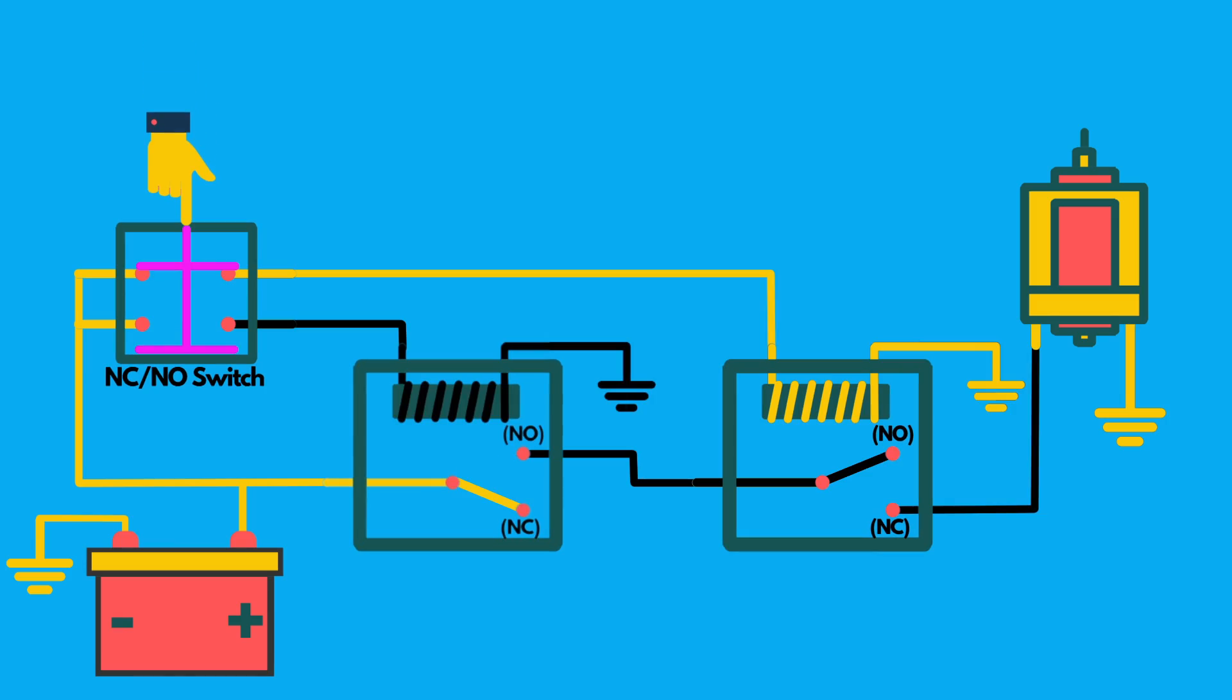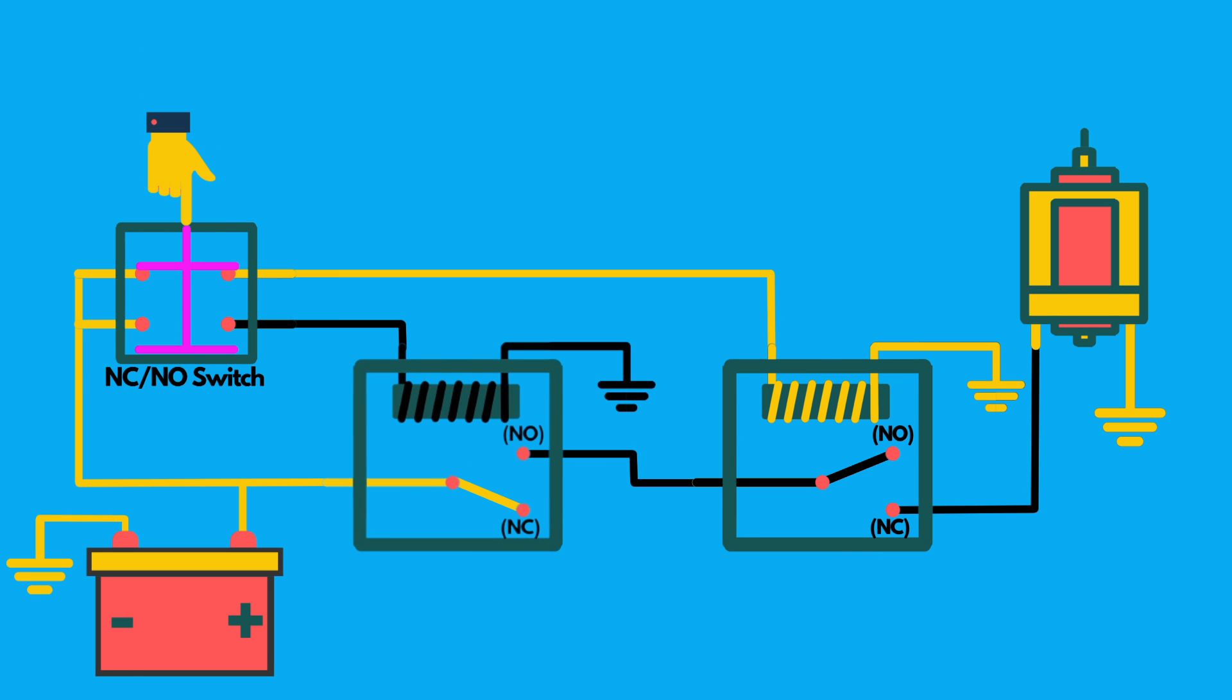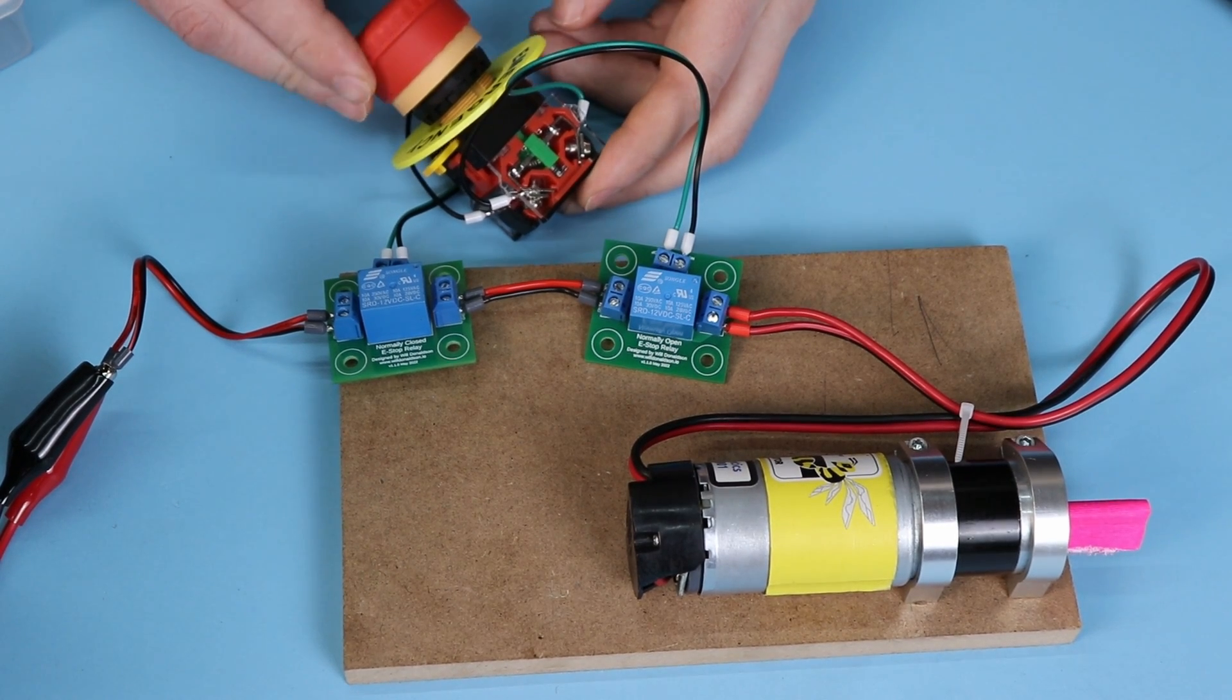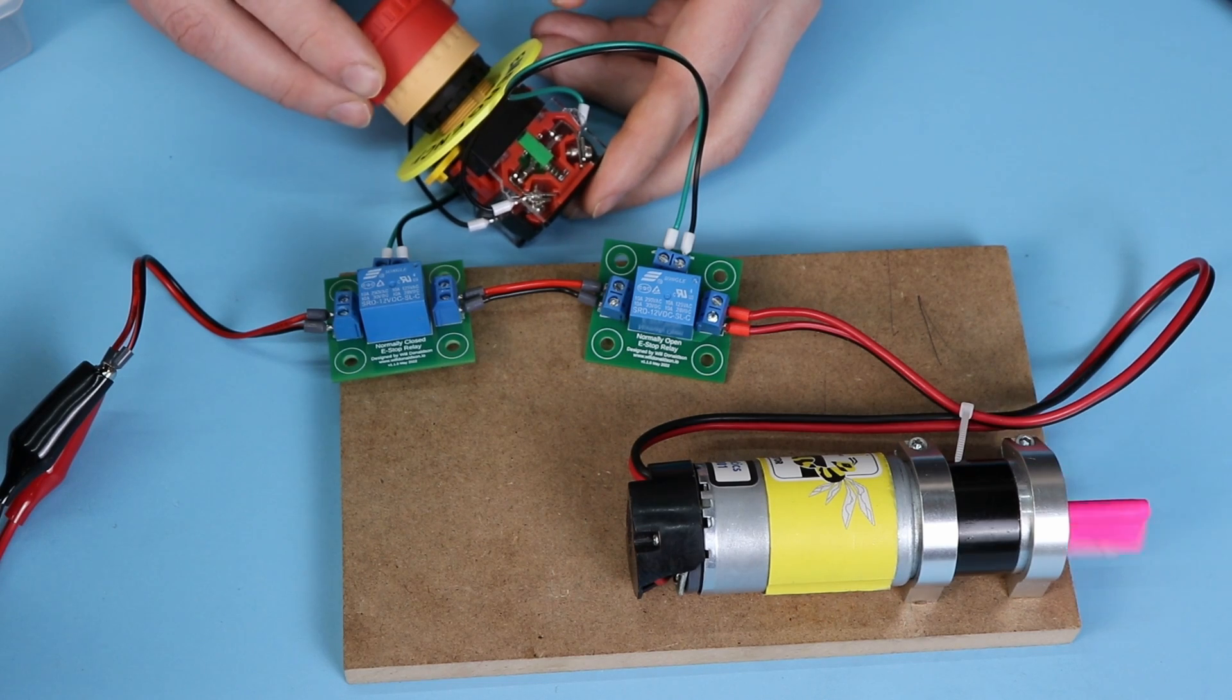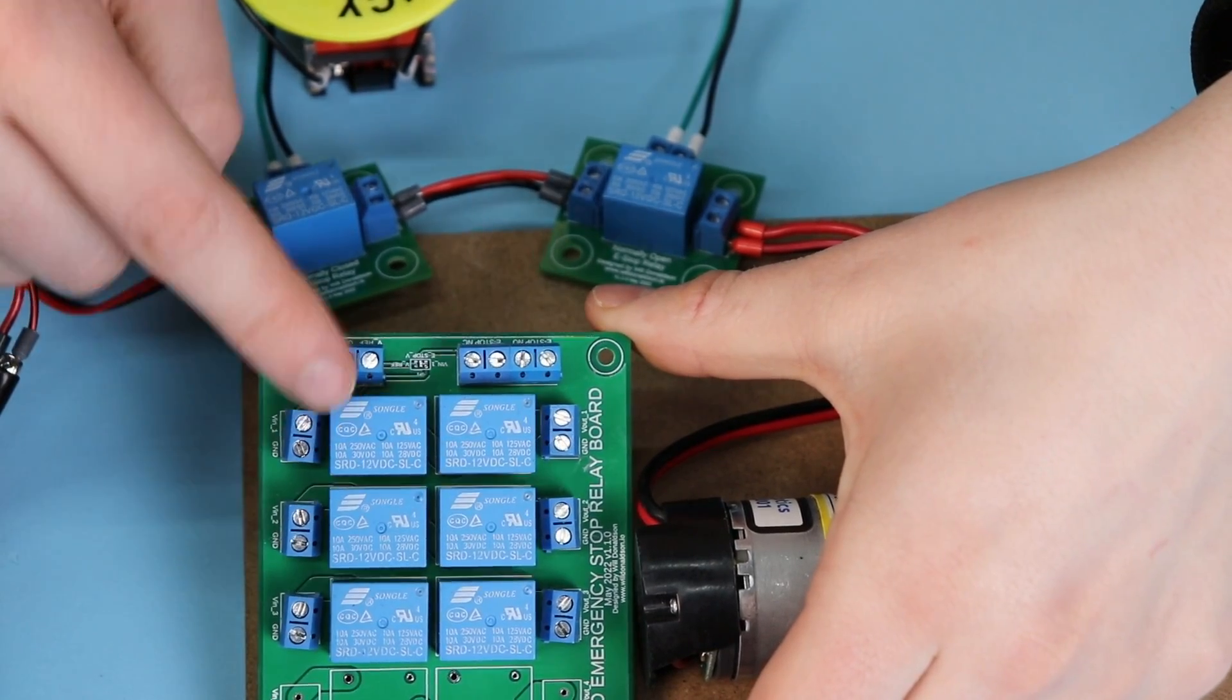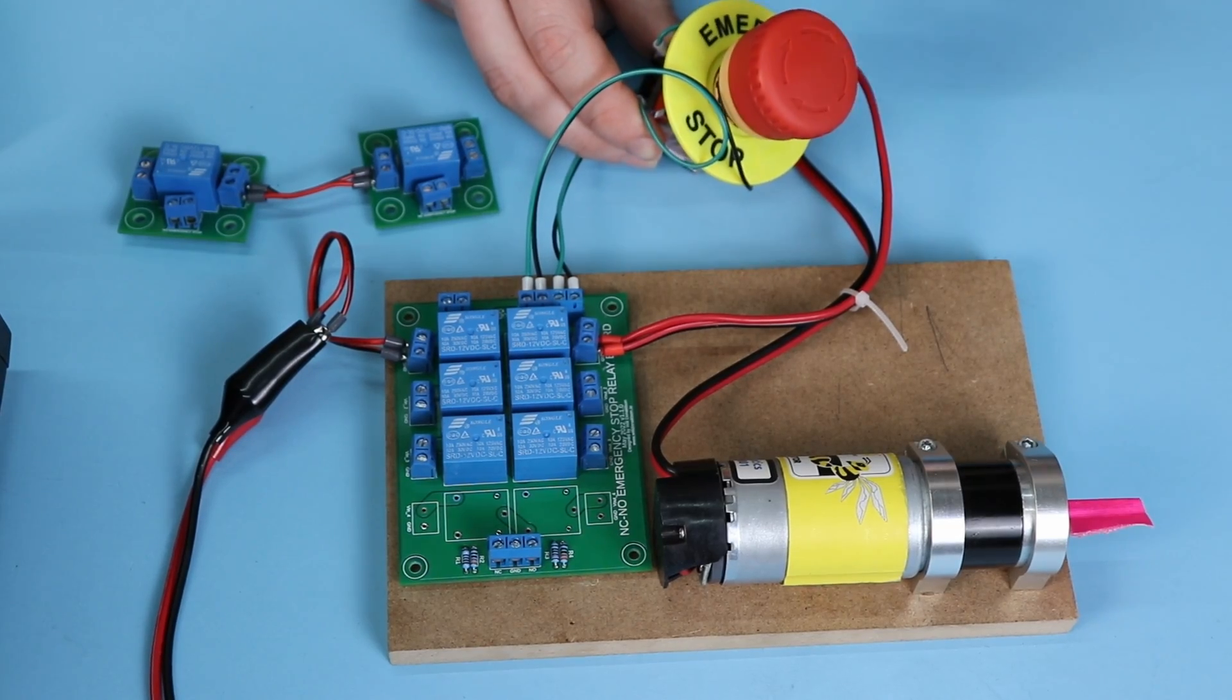By chaining two relays in series, one for normally closed and one for normally open, we can significantly reduce the risk of failure. This setup will only fail in the highly improbable case where there's a simultaneous short circuit and broken connection. That's why I'm replacing the old, normally closed relay board with this new PCB, which includes two relays per motor channel.